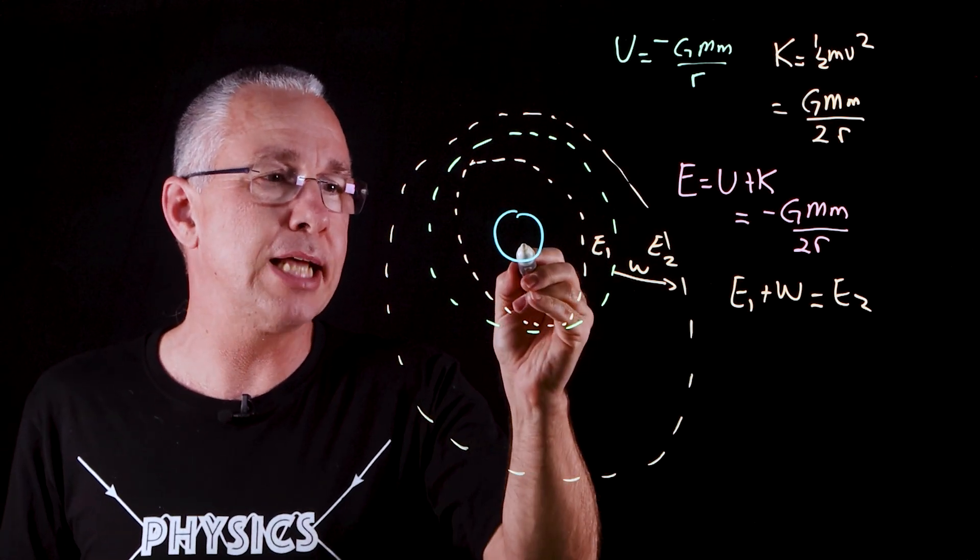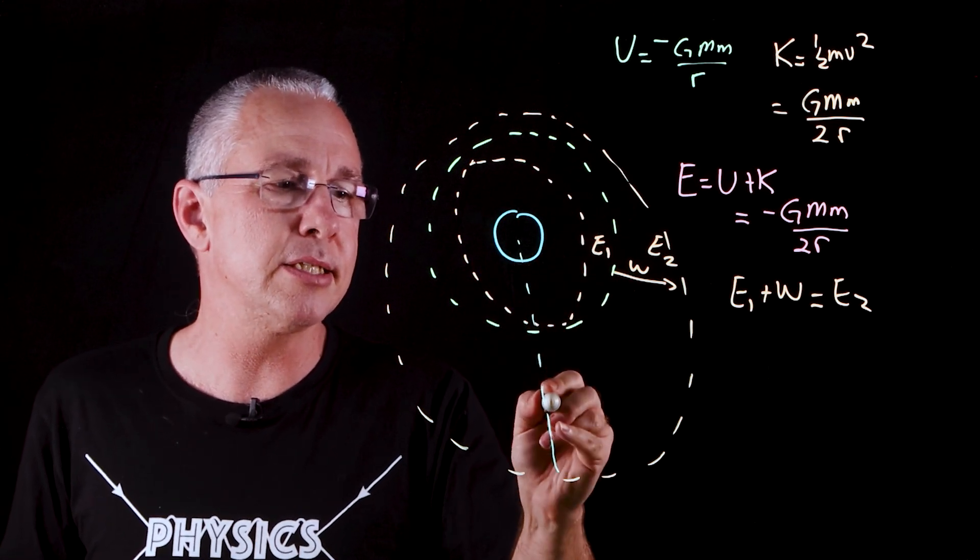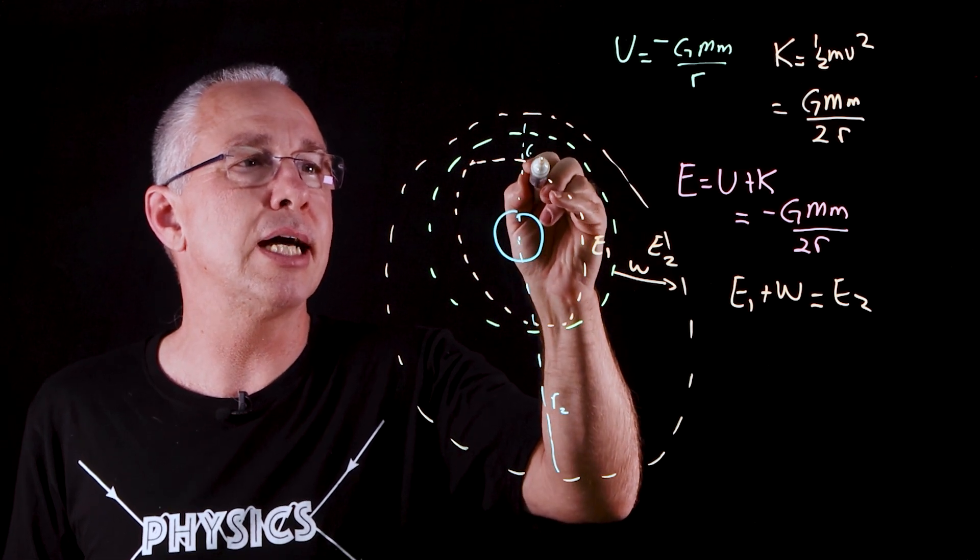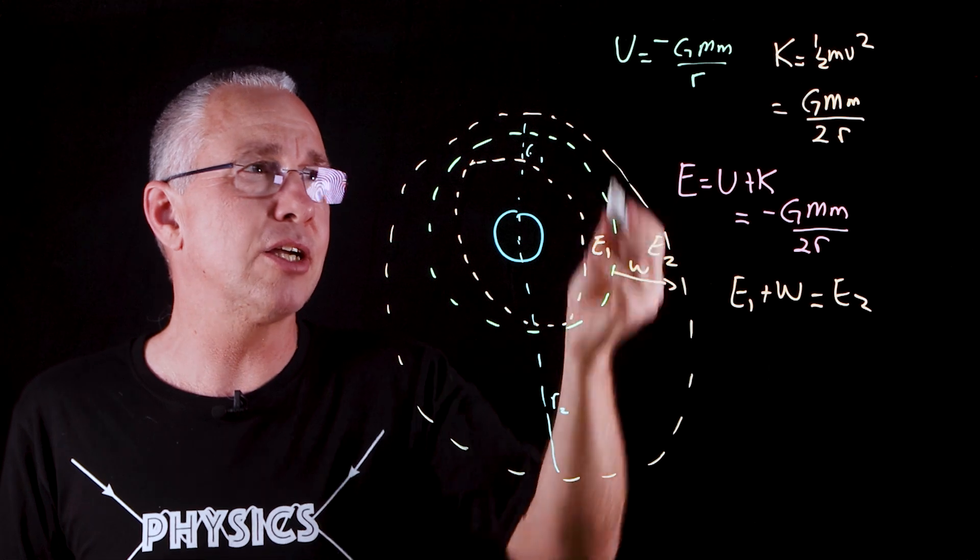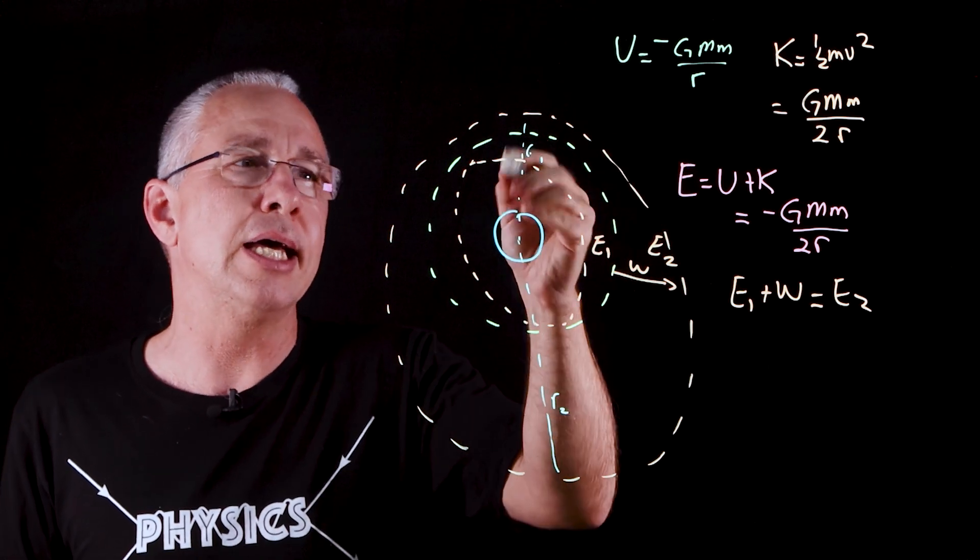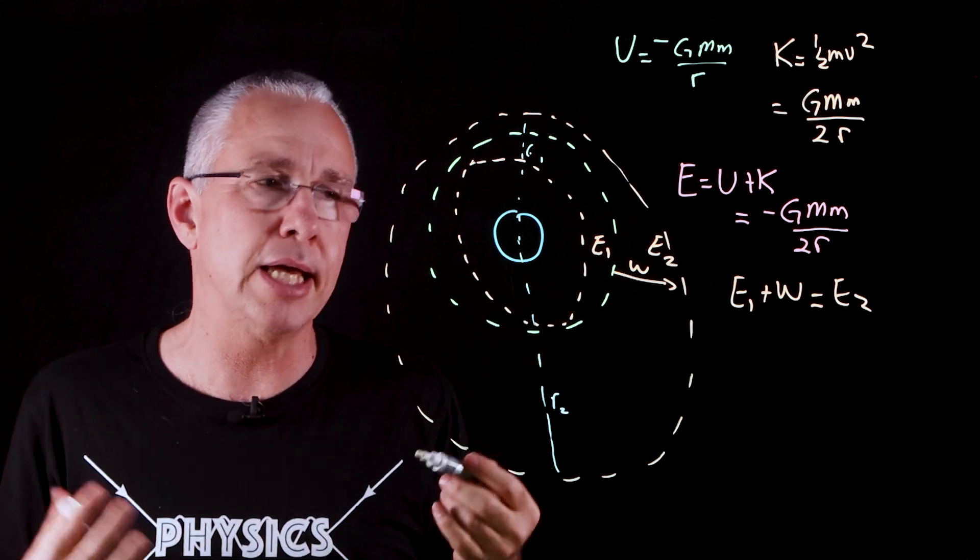And so for example, if we look at the large ellipse that I have over here, you can see this distance r2 is definitely greater than this one is r1. So what we can say is that the gravitational energy is definitely larger for this one over here and smaller for here. But the total energy remains the same.